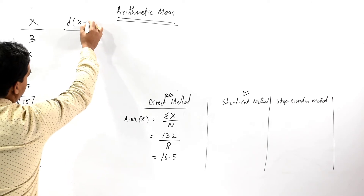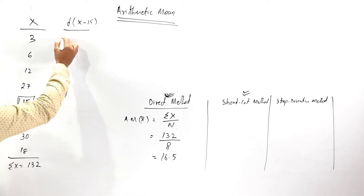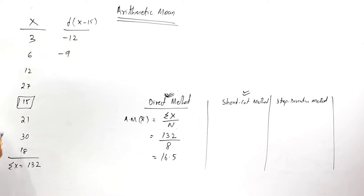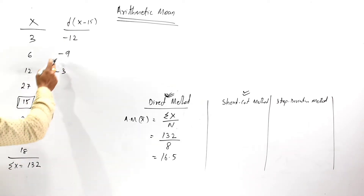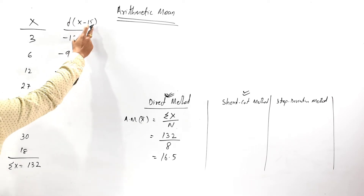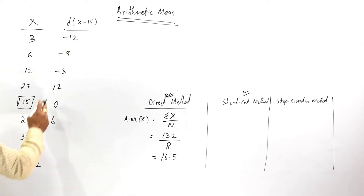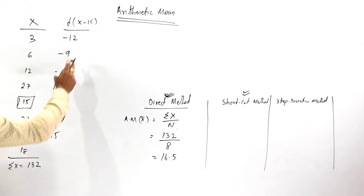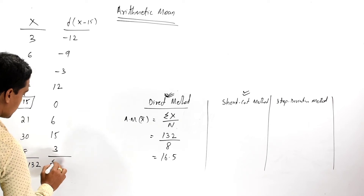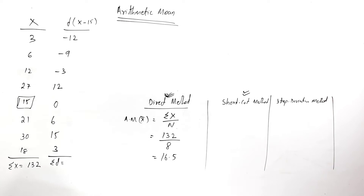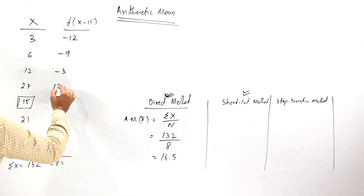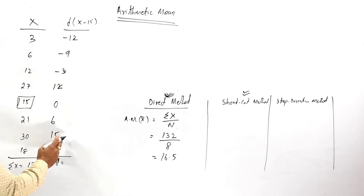The deviation is x minus 15: 3 minus 15 equals minus 12; 6 minus 15 equals minus 9; 12 minus 15 equals minus 3; 27 minus 15 equals 12; 15 minus 15 equals 0; 21 minus 15 equals 6; 30 minus 15 equals 15; 18 minus 15 equals 3. Now the summation of D — after cancelling positives and negatives — equals 12.